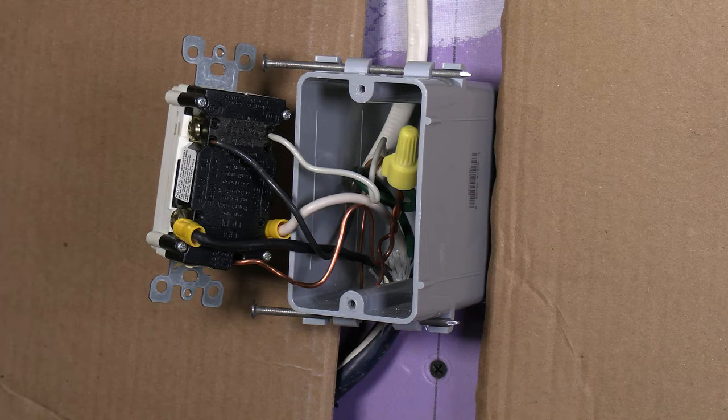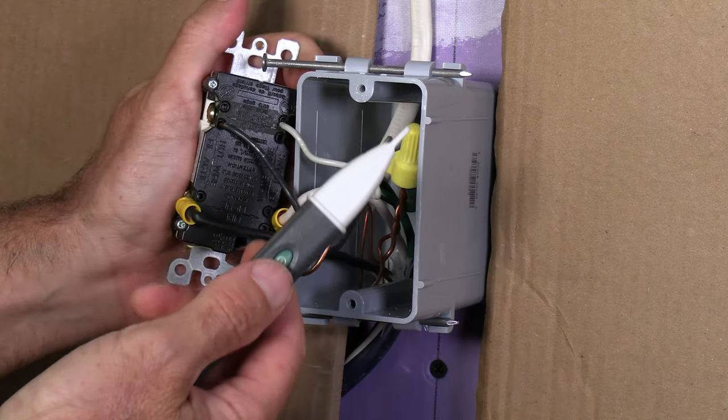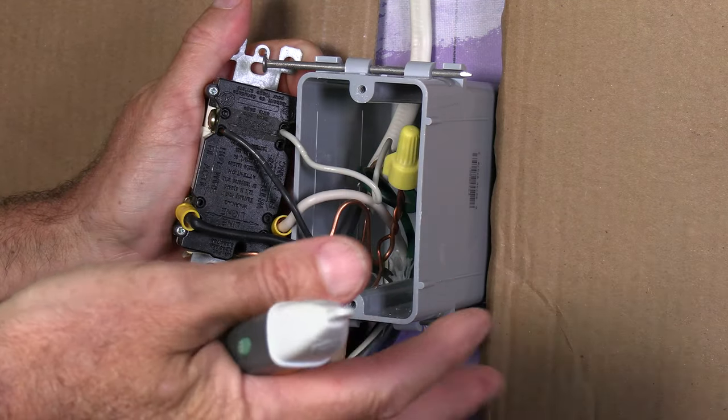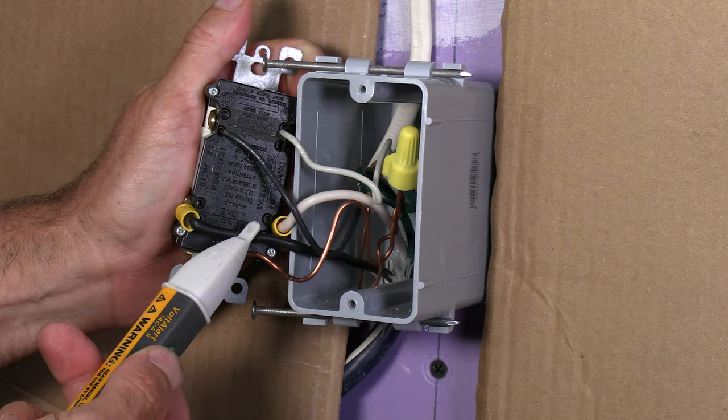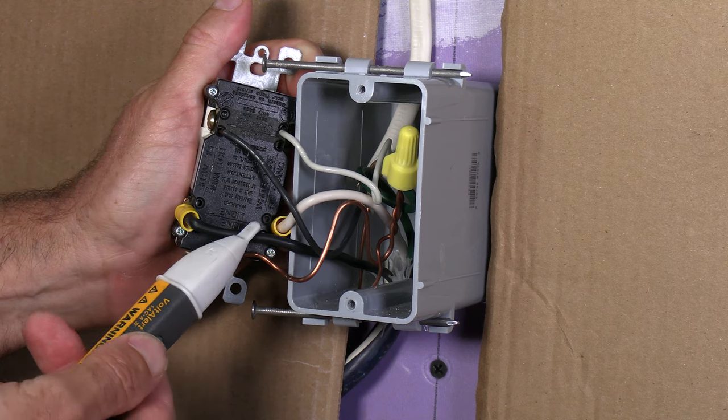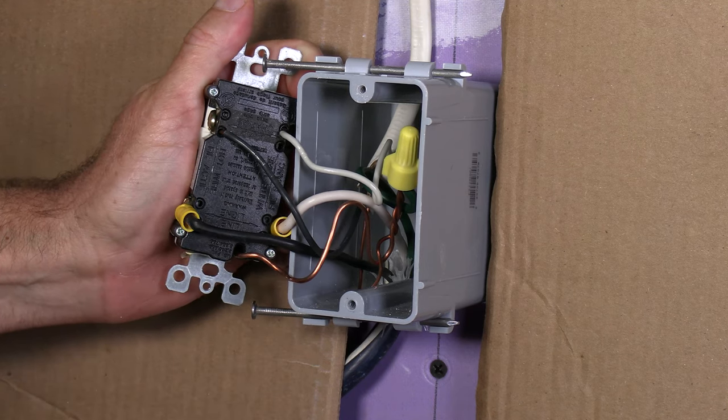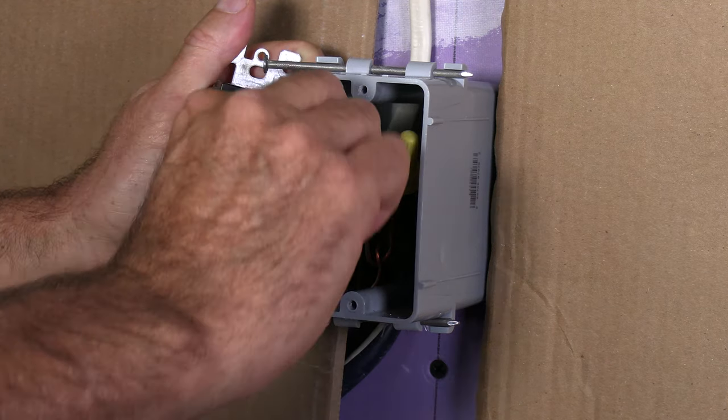Just the only thing you really need to know is the line coming into the GFI is where your power is and you want to use your voltage sensor. If you're not sure when you take everything apart and you forgot which one goes to which, you can use your voltage sensor to kind of hold it on there and it'll light up for you and show you which one is your line. Okay. And then hook the load to your downstream plugs.